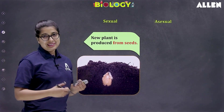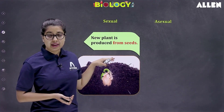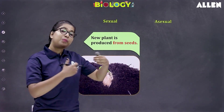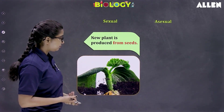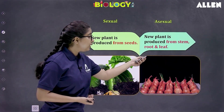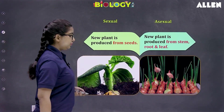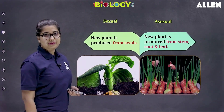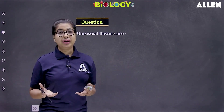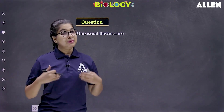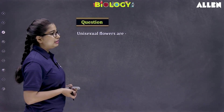Coming back to the differentiation points: in sexual mode of reproduction, seed formation occurs, and from the seed new plants grow and develop. In asexual mode of reproduction, a new plant is produced from either the stem, root, or leaf as visible in this image. This was all about the introduction to reproduction and the modes of reproduction, but we will be studying the details in upcoming sections. Let us have some question practice based on it.